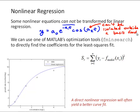We actually couldn't transform this for a general linear least squares approach. So we need to take a different approach entirely. The first approach we're going to look at is using MATLAB's optimization tool called fminsearch to directly find the coefficients for the least squares fit.